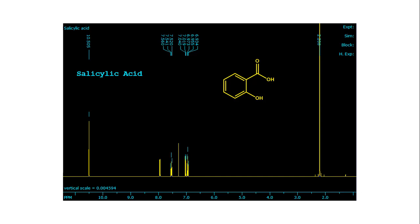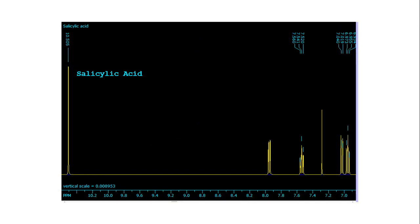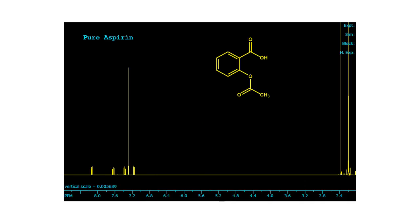Here is salicylic acid by itself. At about 10.5 ppm you see the carboxylic acid proton; the OH is not showing up, but the aromatic protons are definitely showing up between seven and eight ppm. The acetone peak at 2.2 can be disregarded. Here is a zoom of the aromatic section. And then this is the pure aspirin — you see the aromatics, and for some reason the carboxylic acid proton doesn't show up in the pure sample, though it is still there.